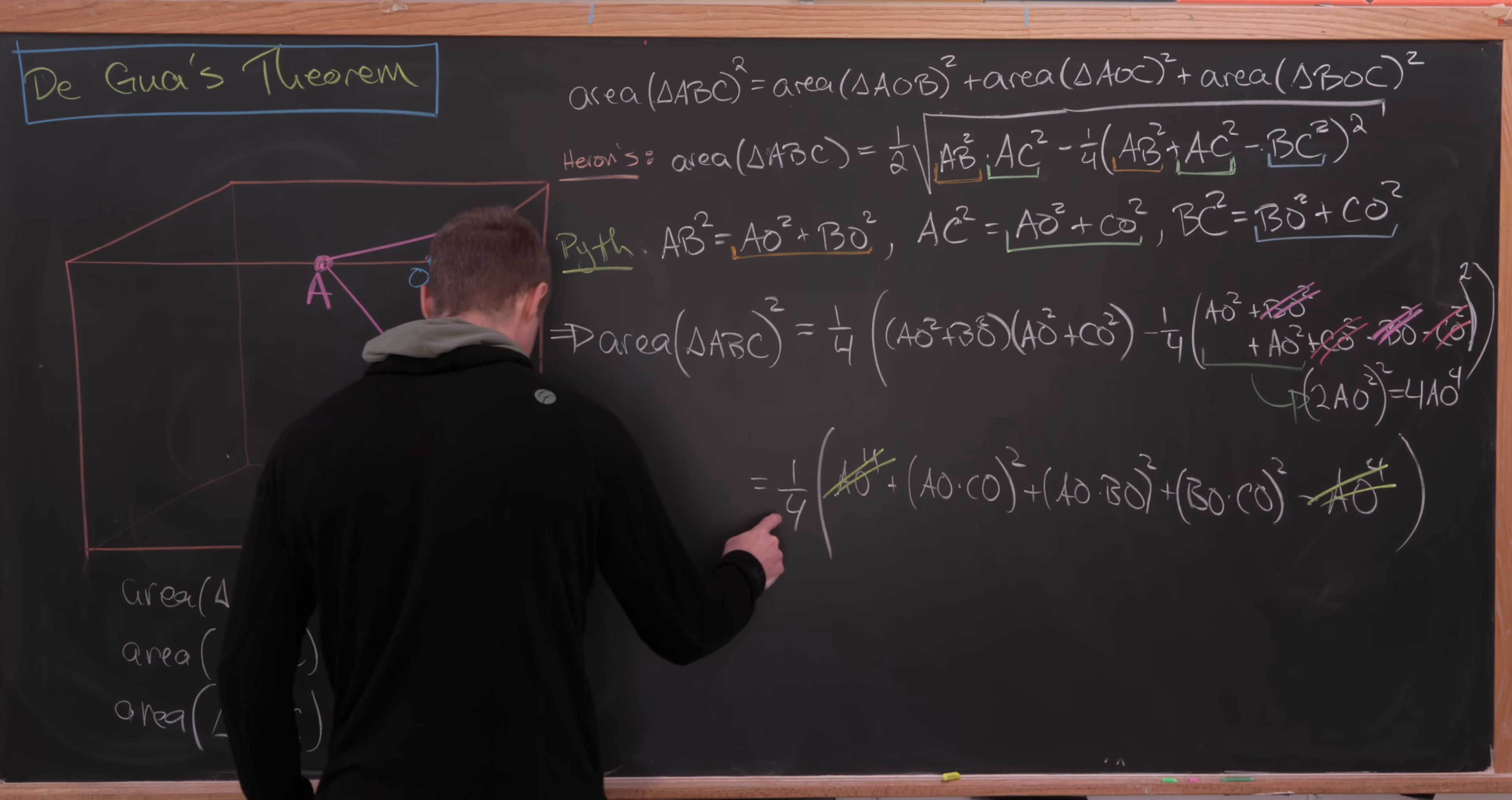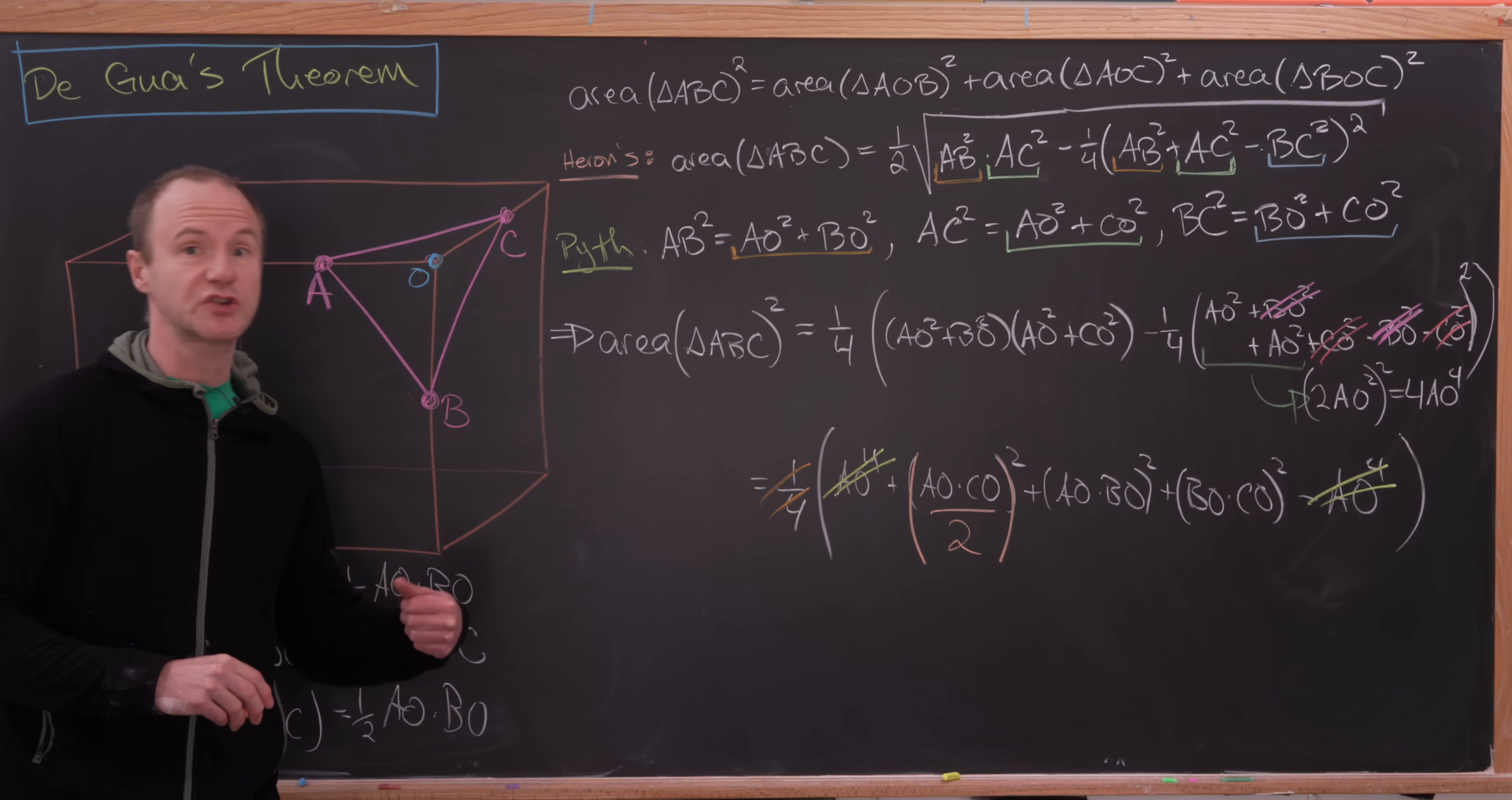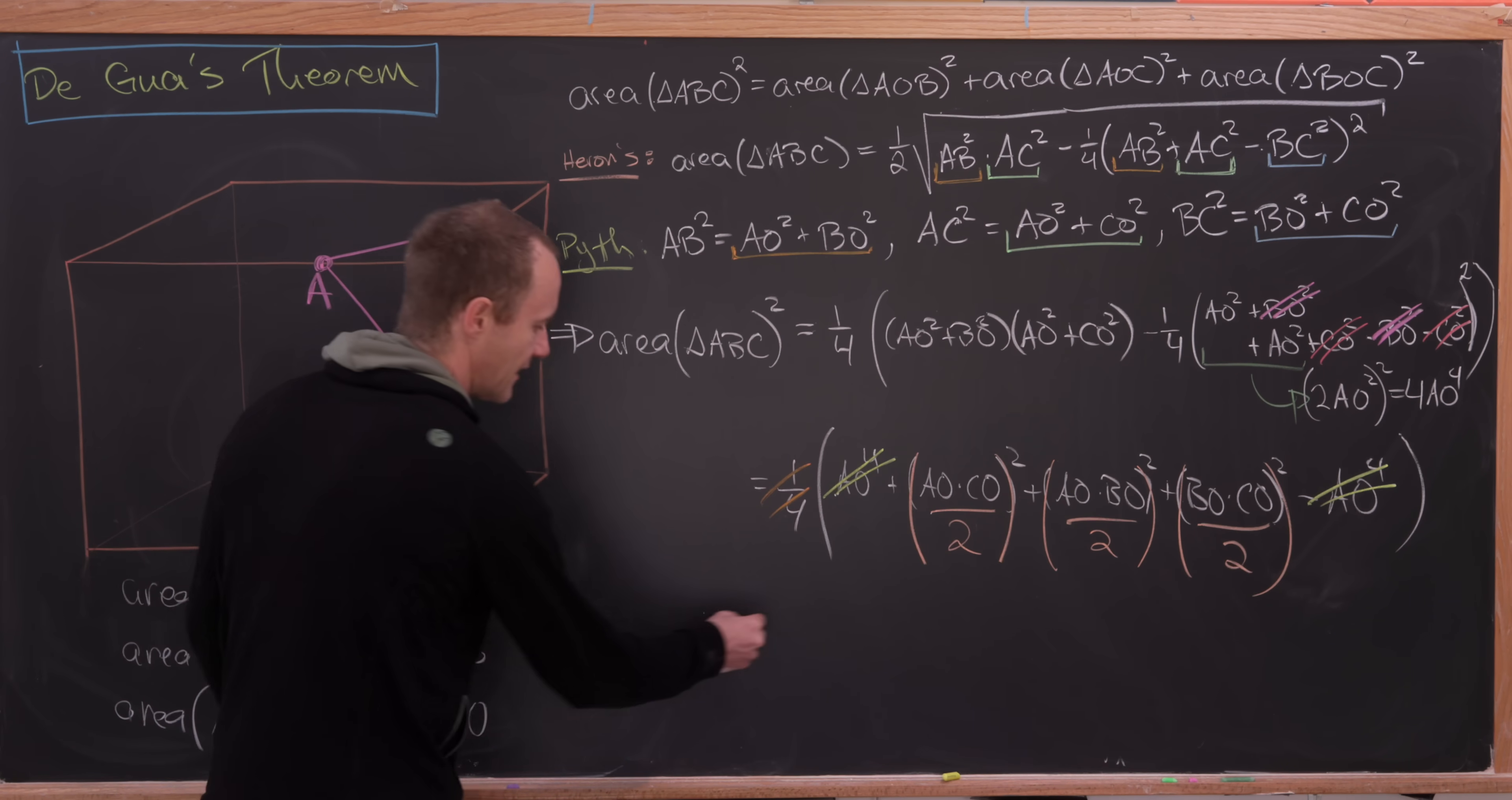and then we can take this one quarter and bring it inside. But if we bring it inside, well, we can extend these parentheses and write it as AO times CO over two squared. That's because that two in the denominator will change to a four in the denominator after squaring. And we'll do that for all of these bits. But now let's look at what we have.